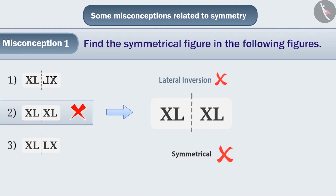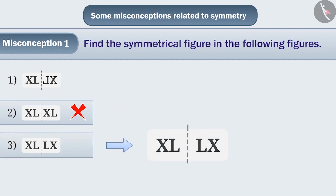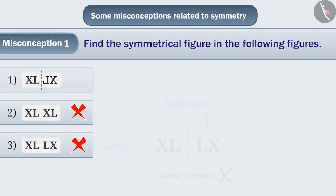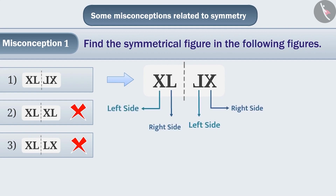Some children cannot understand the concept of symmetry properly. They think in option 3, the two parts are reflections of each other. That is why they select option 3. But this is also the wrong answer because even here the lateral inversion is not properly represented. If we talk about option 1, the left and right parts are reflections of each other — the right part of the figure is visible on the left and the left part is on the right in the reflection. The part of one side of the dotted line resembles exactly the part of the other side. Hence, the figure shown in option 1 is a symmetric shape. Therefore, the correct answer is option 1.